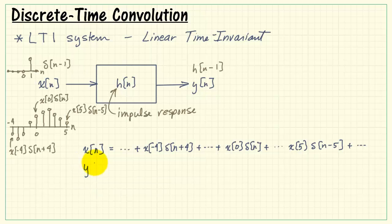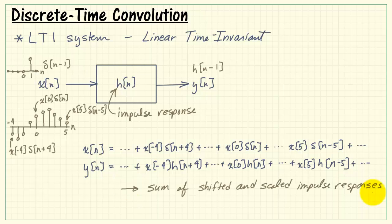Now, y of n is likewise a large sum of values. The scaling factor remains the same, but now delta located at n equals minus 4 causes the sequence h advanced by 4 places. In a similar way, x of 0 multiplies the original impulse response, and x of 5 multiplies h of n minus 5. We then see that we have a sum of shifted and scaled impulse responses.